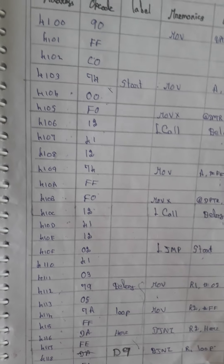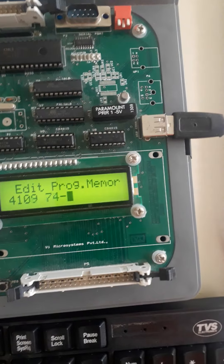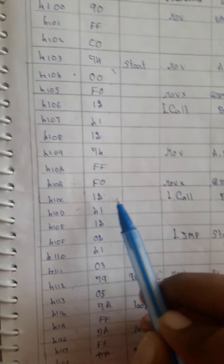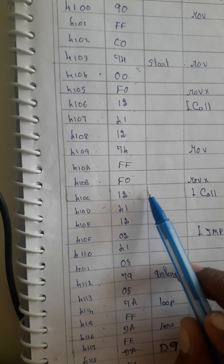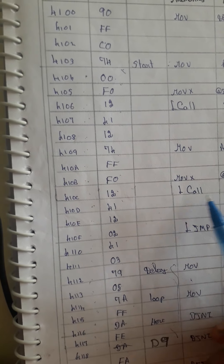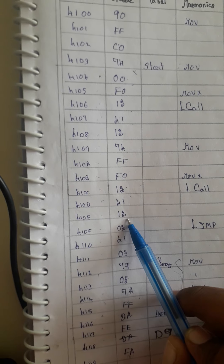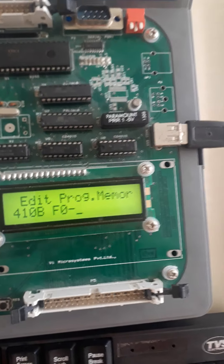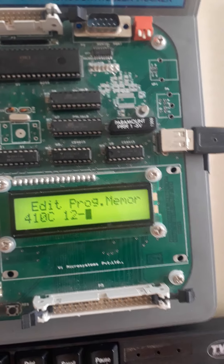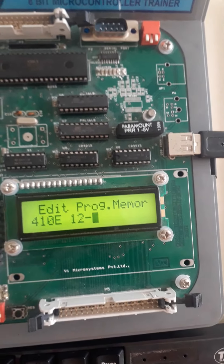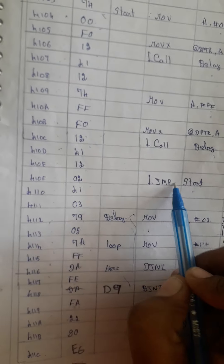Then 74 FF, F0 (move FF to DAC port), followed by the delay call. 02 is the opcode for L jump, then the start address to loop back. The delay routine is called using L call to the delay address.